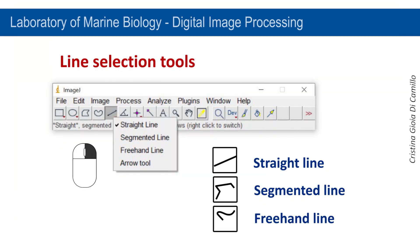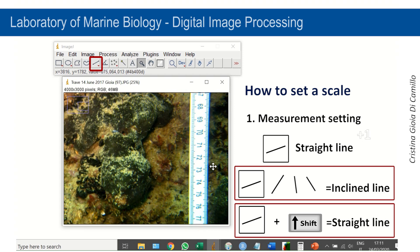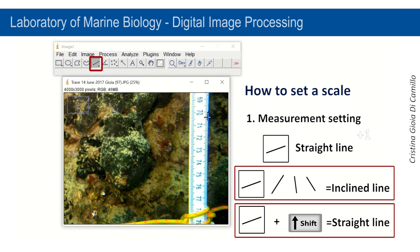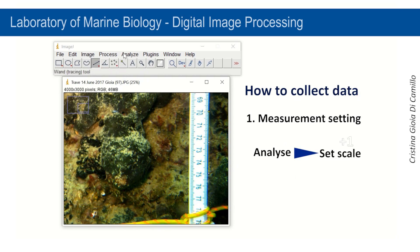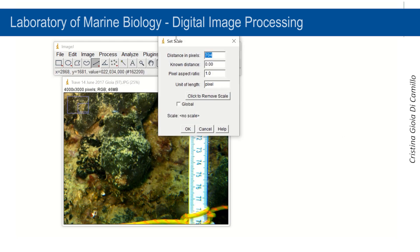This is the Line Selection tool. Left-clicking with your mouse, you can choose among three types of lines: straight, segmented, and freehand lines. Before collecting measurements, it is necessary to set a scale. Select the straight tool and draw a line parallel to a scale bar on the photo. If you click the Shift button while dragging the mouse, the line will be straight. The software supplies measurements in pixels.